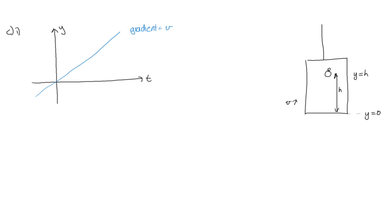Drawing the apple in red: it starts at h. Before it is released, it travels up with the lift at constant speed v — a straight line. Once released, gravity acts to accelerate it downwards. Gravity takes a little while to change its motion from upwards to downwards, so this is going to be a parabolic path. So this is the apple — it's a parabola.